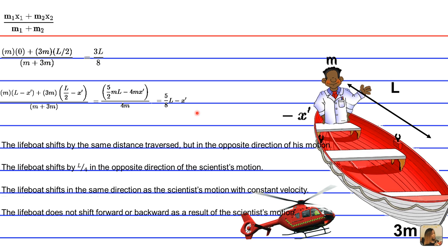So let's continue. The boat starts in equilibrium and will remain in equilibrium throughout his walk. So the center of mass remains stationary, although he's walking. Therefore, we can set the expressions that we got for the initial position and second position equivalent to each other.